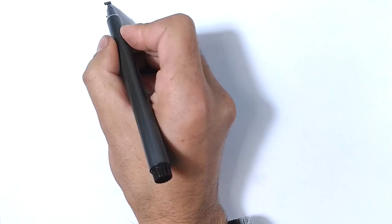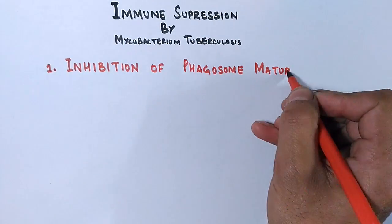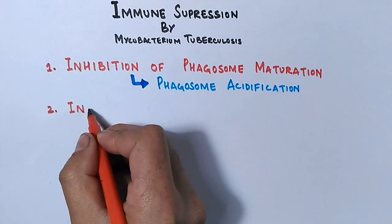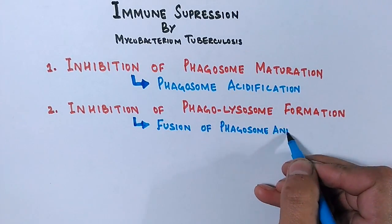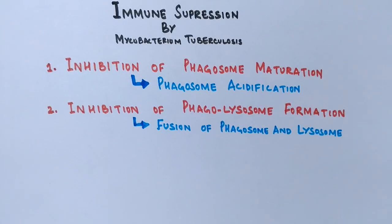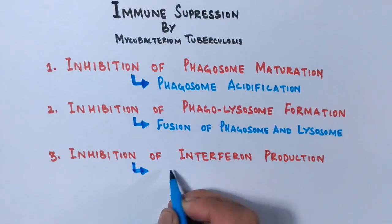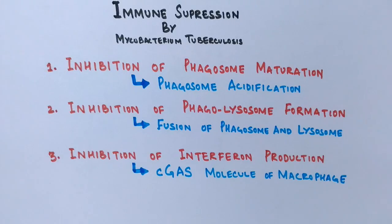Now let's dig into it and see how this mycobacteria outsmarts our immune system at molecular level. The immune suppression by mycobacterium tuberculosis has various mechanisms. The first is the inhibition of phagosome maturation which involves the inhibition of phagosome acidification. The second one is the inhibition of phagolysosome formation, that is the inhibition of fusion of phagosome with lysosome. And the third important one is the inhibition of interferon production by macrophages through cGAS molecule inhibition. Now let's discuss each of these survival methods one by one.